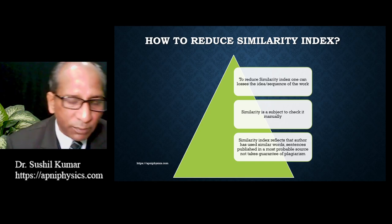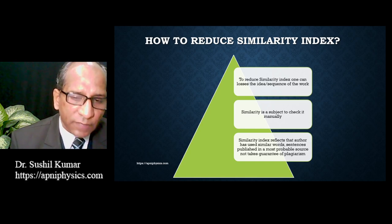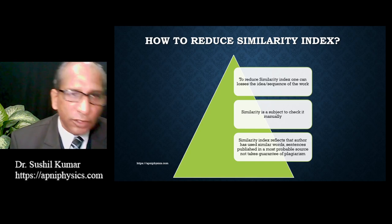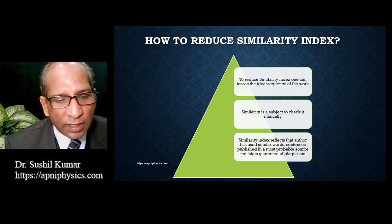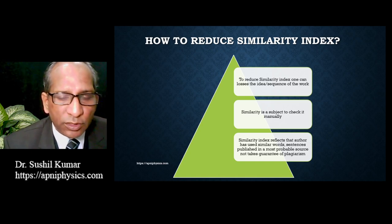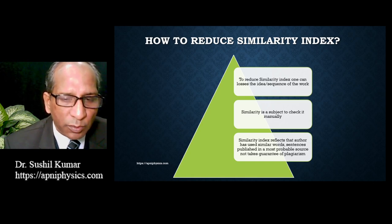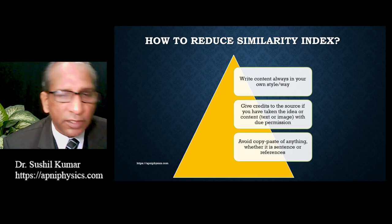Sometimes the information which the researcher wants to convey gets essentially destroyed through this process. This bad practice is what researchers refer to as paraphrasing. Similarity is a subject that should be checked manually. The similarity index reflects that the author has used similar words or sentences published in the most probable source — it does not guarantee plagiarism.